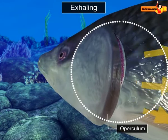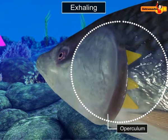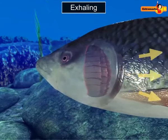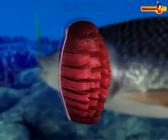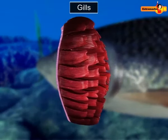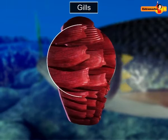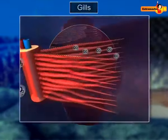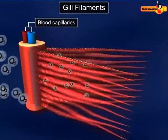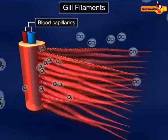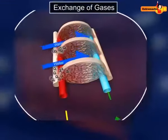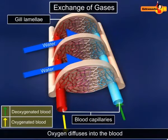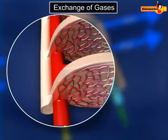The color of the gills is dark red or brownish-red because of the presence of a large number of blood capillaries. These capillaries come in close contact with the current of water crossing the gills. Blood absorbs the dissolved oxygen from the water by diffusion.